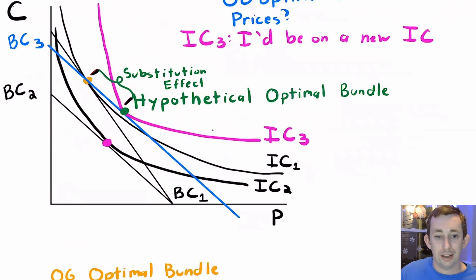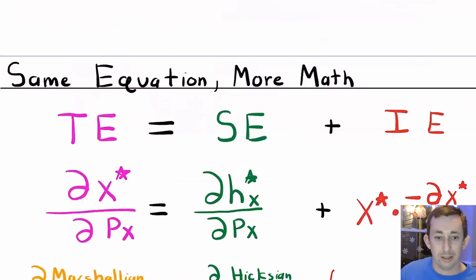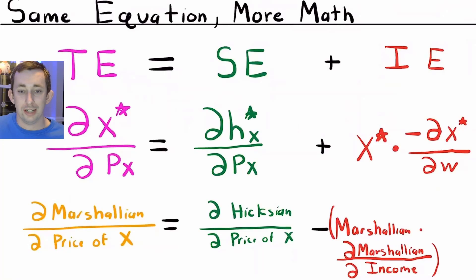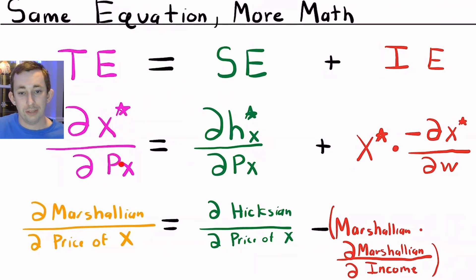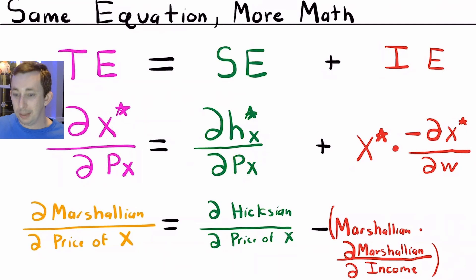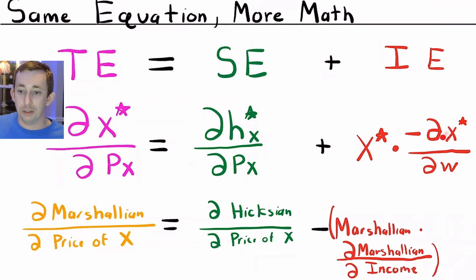But how can we handle this in terms of math? In terms of math, we turn to the Marshallian and Hicksian demand. The Slutsky equation states that the total effect is the derivative of Marshallian demand with respect to price. For Chipotle, that's the derivative of Marshallian demand for Chipotle with respect to the price of Chipotle. The substitution effect is the derivative of the Hicksian demand for Chipotle with respect to the price of Chipotle. The income effect is the Marshallian demand of Chipotle times negative one — or the negative derivative of Marshallian demand for Chipotle with respect to income.